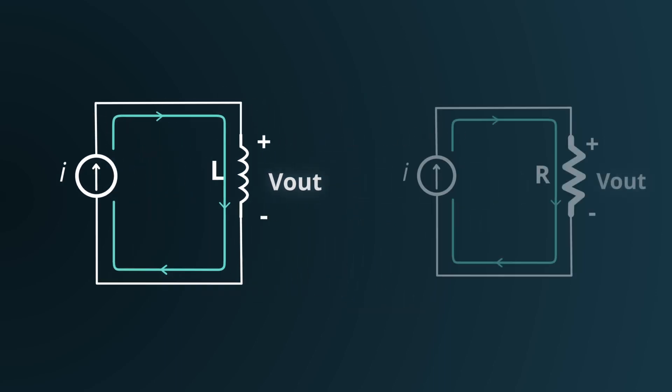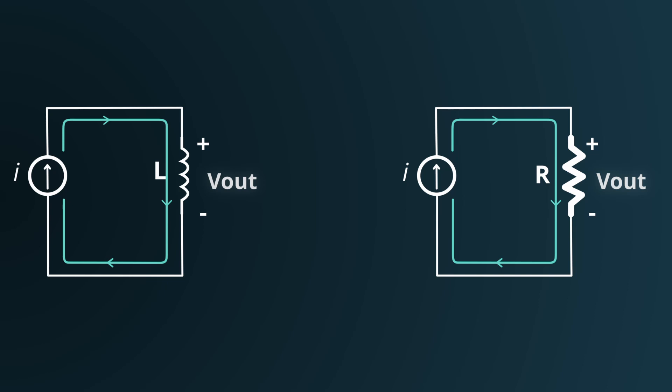In the case of a resistor this is quite simple. As many of you might recall, the voltage across a resistor is readily calculated using Ohm's law. But what about for our inductor? Can we apply the same principle?